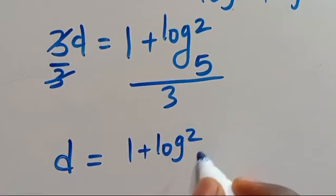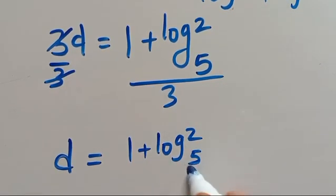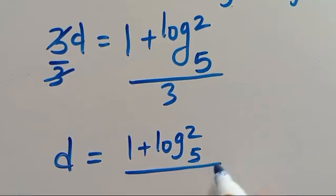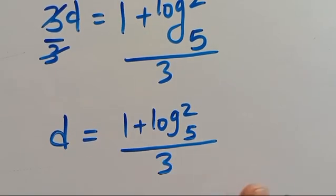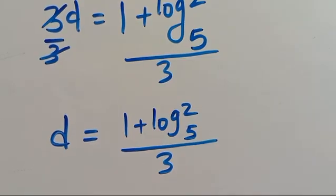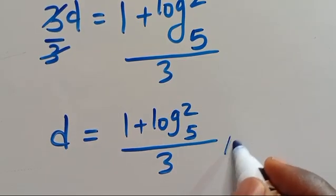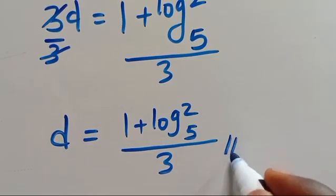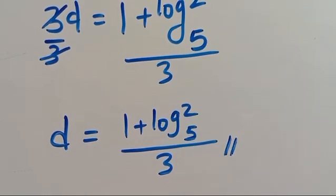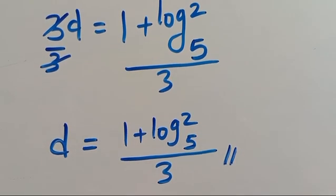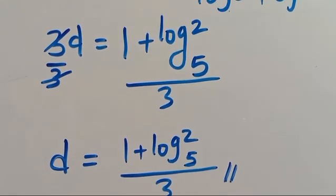Then dividing both sides by 3, we have D equals 1 plus log 2 in base 5, all divided by 3. Then let us check this value.